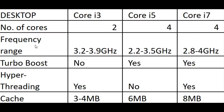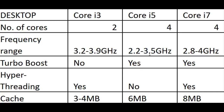Moving on to the next category: frequency range. You can see that the Core i3 actually runs at a higher frequency than the Core i5, but this is a little misleading. To explain what frequency range means — if you're running at 3.2 gigahertz, that basically means you're running 3.2 million clocks per cycle.